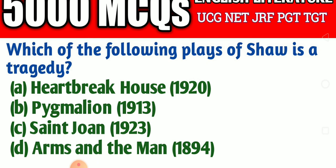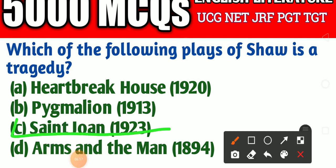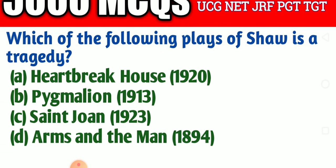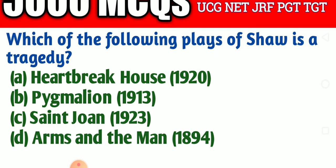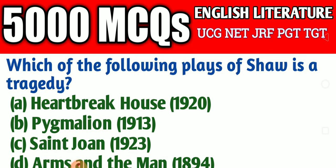Which of the following plays of Shaw is a tragedy? Option A: Heartbreak House, Option B: Pygmalion, Option C: Saint Joan, Option D: Arms and the Man. The right answer is Option C — Saint Joan (1923) is the tragedy. This was the last question of the series. If you find this video helpful, please subscribe to my channel. Thank you so much.